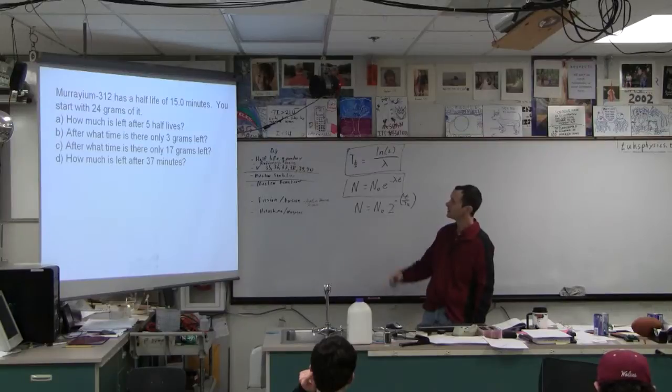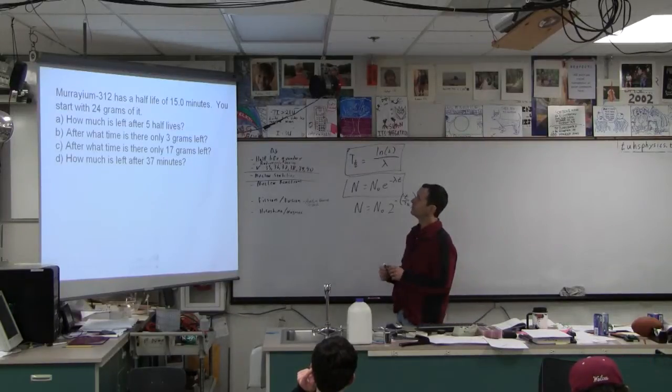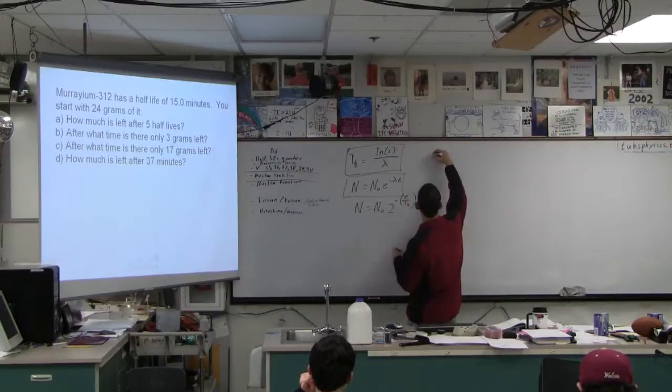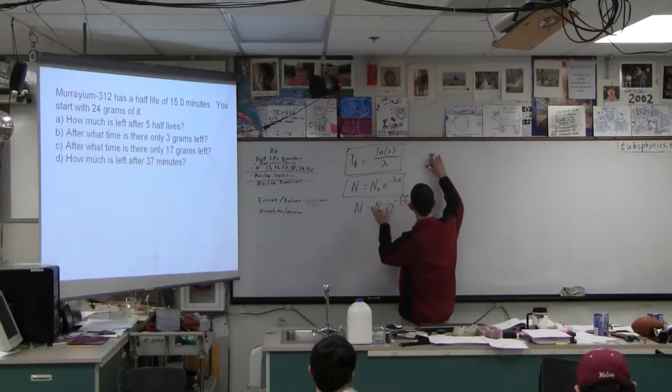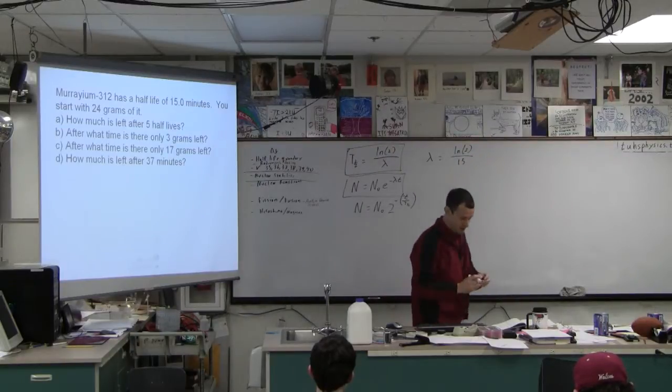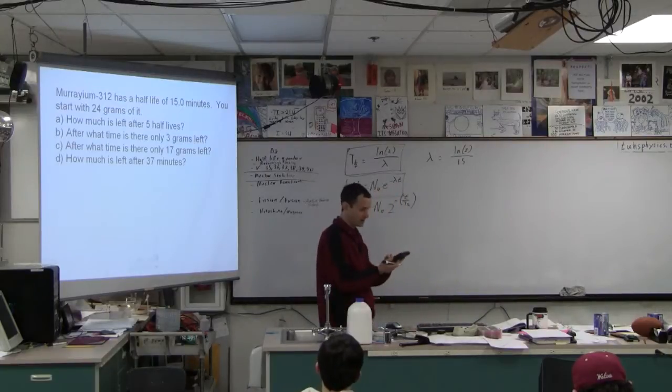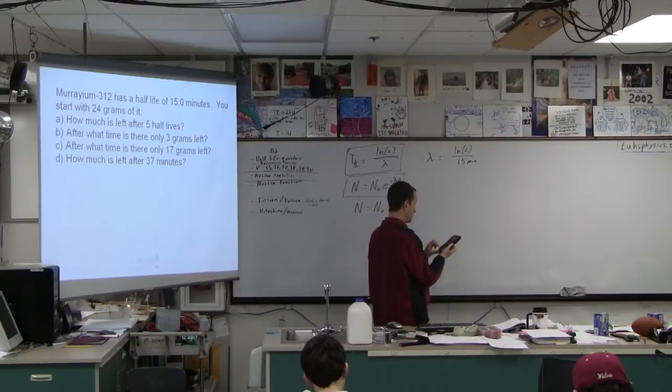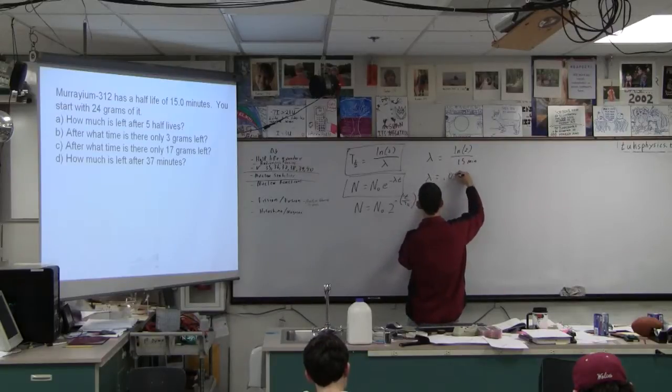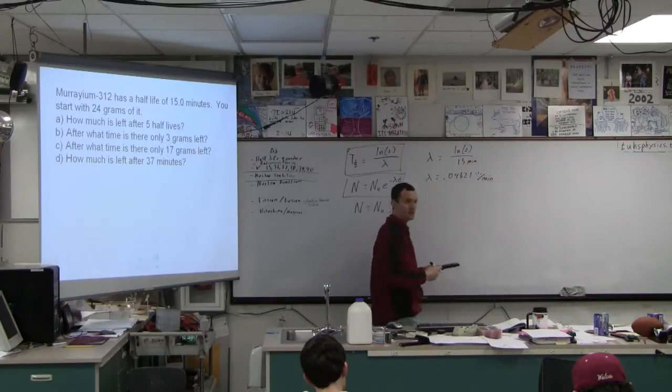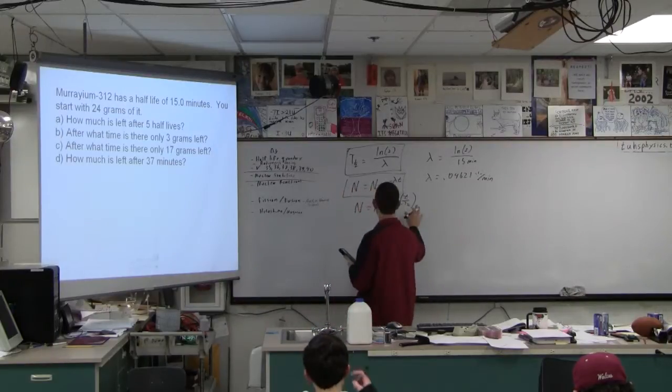And then after what time are there only 17 grams left? So the thing to do is I'm going to do it the way we're supposed to using these formulas. So lambda is going to be LN2 divided by 15. Notice I'm using minutes, and I'm not using seconds, because I'm going to get an answer in minutes. This is 15 minutes. So we go natural log of 2 divided by 15, and this is lambda equals 0.04621, and this is probability per minute. It's the probability per minute that it's going to occur.